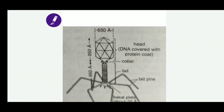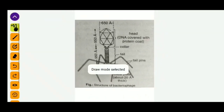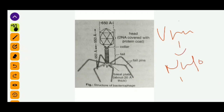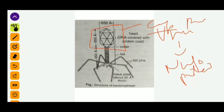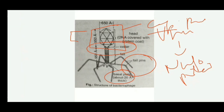This is the general structure of bacteriophage. Since viruses are nucleoproteins, they are made of nucleic acid and protein. The head-like structure is the capsid, which is made of protein, and inside the capsid their genetic material is present. The genetic material is enclosed by the capsid — a protein coat. They are crystal-like structures, about 650 angstroms wide and 950 angstroms long from tail to head, with a collar in the middle. They have tail pins and a basal plate about 20 angstroms thick, which helps them attach to and penetrate the bacterial cell.